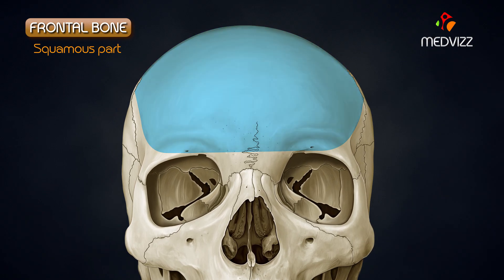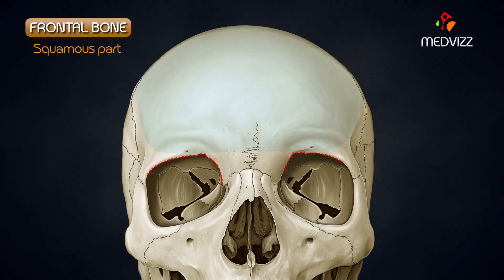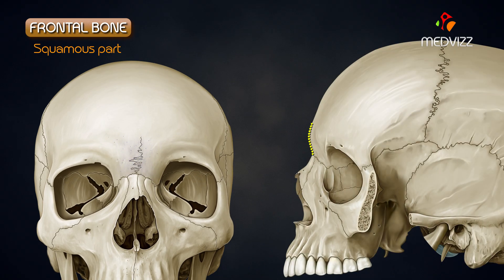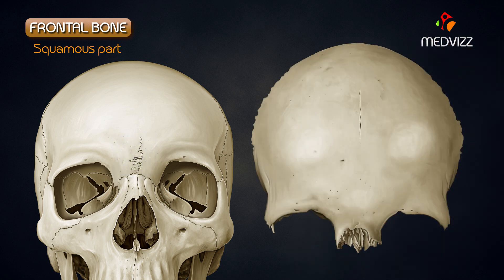The external surface above each supraorbital margin presents a curved elevation known as the supraciliary arch. A rounded prominence between the medial ends of the two supraciliary arches is known as the glabella. Above the supraciliary arch, the external surface displays an elevation known as the frontal tuber or eminence.